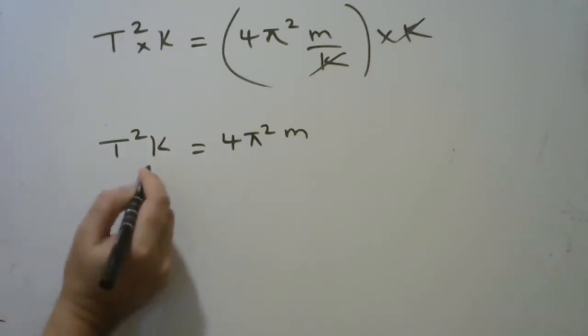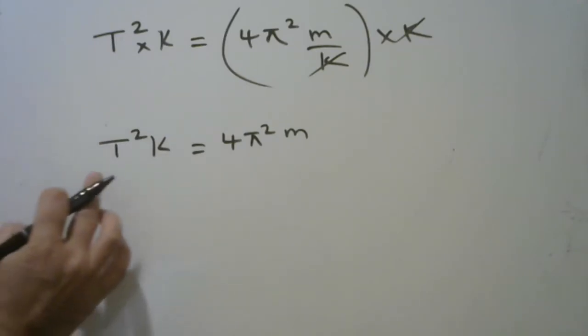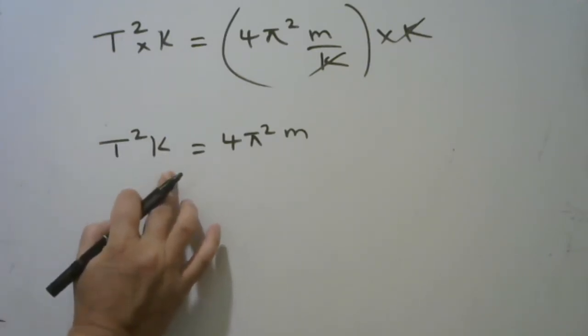We want to find k, so we need to get rid of this T squared. To get rid of the T squared, we need to divide by T squared.